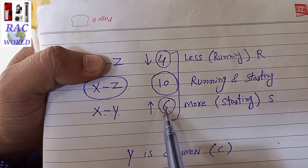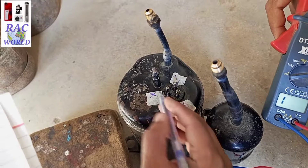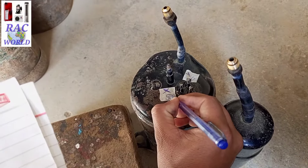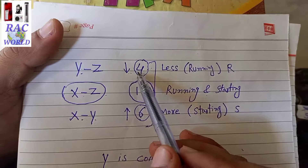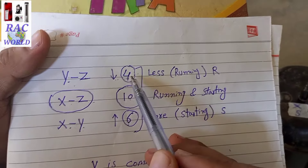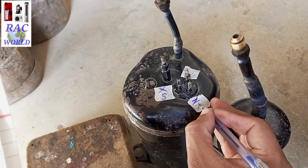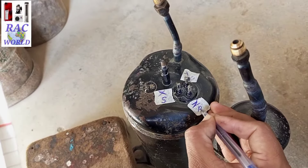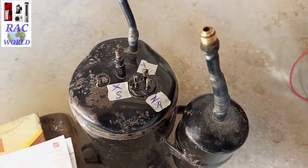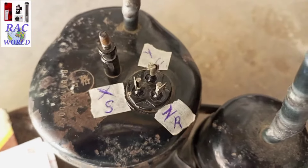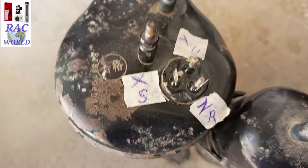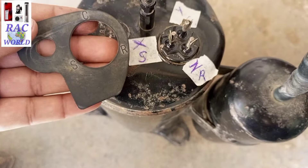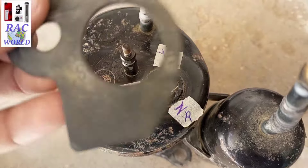So X is our starting point and Z is our running terminal. I will write 'S' for X and 'R' for Z on the compressor. To summarize: Y is our common, Z is our running, and X is our starting. Now I am going to verify this by matching with the rubber seal label provided by the company.